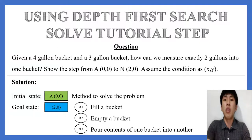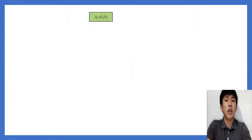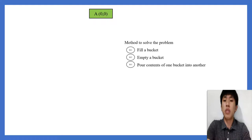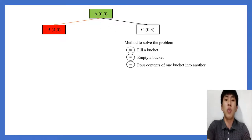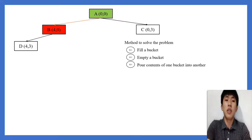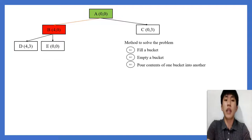We're showing the mapping from initial state to goal state. From the green A=(0,0), using Method 1 to fill x=4 gives B=(4,0), and using the same method to fill y=3 gives C=(0,3). Focusing on (4,0) first: using Method 1 to fill y=3 gives (4,3); using Method 2 to empty x gives (0,0); and using Method 3 to pour from x to y gives (1,3).